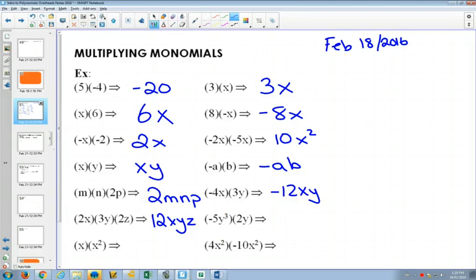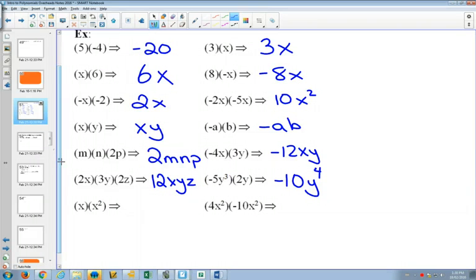So up till now we've just put our variables together and it's been straightforward. But we can also use our exponent laws that we learned last semester to help us as well. Now if I have negative 5y cubed times 2y, what's the coefficient going to be when I multiply? Negative 10. How many y's are there going to be all multiplied together? 4 of them. So we can write that as y to the 4.